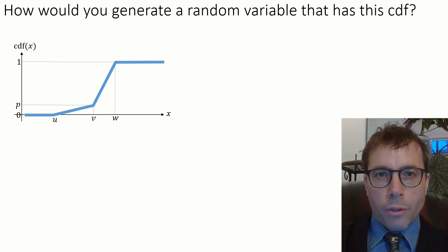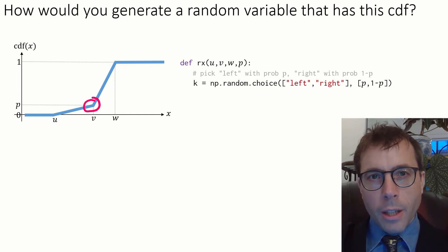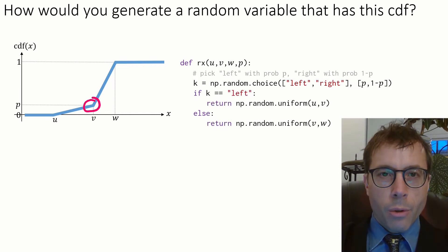This one takes a bit more creative thinking. The way I'd reason about it is this. The graph says that with probability p, we're to generate values to the left of v. So the first thing I'm going to do is make this random choice, either generate something to the left of v or something to the right of v. If I've decided to generate something on the left, then all values between u and v are equally likely because the CDF has constant slope. So I'll simply generate a uniform random variable.